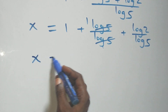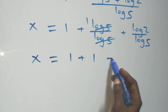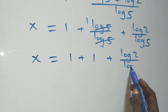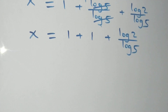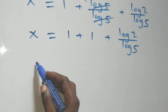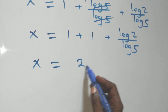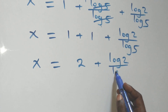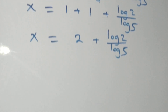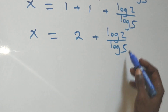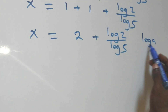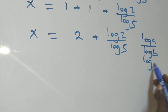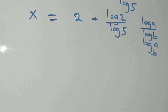Log(5) cancels in the middle fraction, leaving 1, so x = 1 + 1 + log(2)/log(5), which gives x = 2 + log(2)/log(5). We now apply the change of base rule, where log(a)/log(b) = log base b of a.